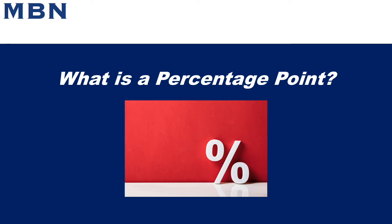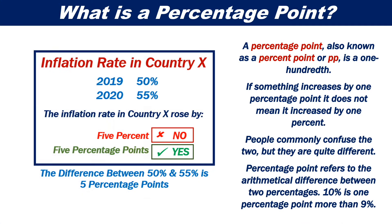What is a percentage point? A percentage point, also known as a percent point or PP, is a 100th. If something increases by one percentage point, it does not mean it increased by 1%. People commonly confuse the two, but they are quite different.